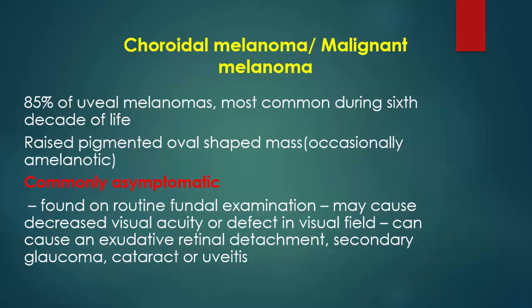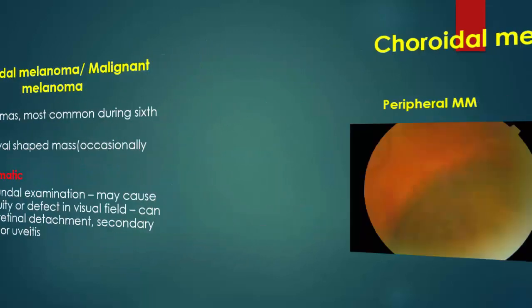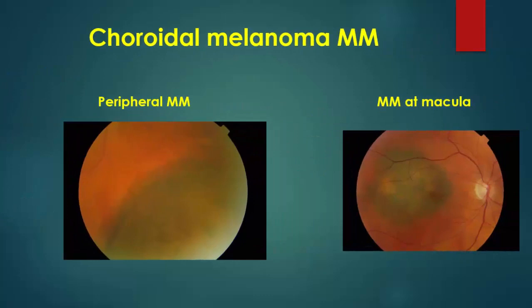Choroidal melanoma is 85 percent of uveal melanoma and is most common during the sixth decade of life. It presents as a raised, pigmented, oval-shaped mass — occasionally amelanotic — and is commonly asymptomatic, found on routine fundus examination. It can cause decreased visual acuity, visual field defect, exudative retinal detachment, secondary glaucoma, cataract, and uveitis. Choroidal melanoma may be peripheral as a sub-retinal lesion, or at the macula and sub-retinal in nature.